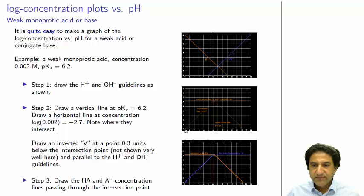Next, we draw an inverted V. This is the inverted V of slope positive 1 and negative 1. So the positive 1 line is parallel to the OH line, and the minus 1 line is parallel to the H-plus line. Now, you're probably wondering, well, yeah, all that's fine, but what's this got to do with the concentration of the actual species in solution?